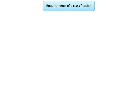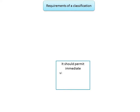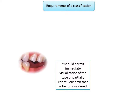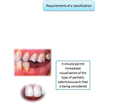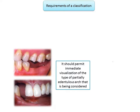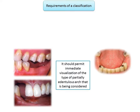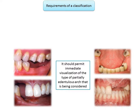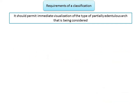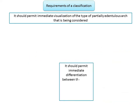Requirements of a classification: a classification must satisfy the following norms. It should permit immediate visualization of the type of partially edentulous arch being considered. There are a few images of partially edentulous arches, and in order to communicate which teeth are missing, we need a classification that suits these edentulous spaces.